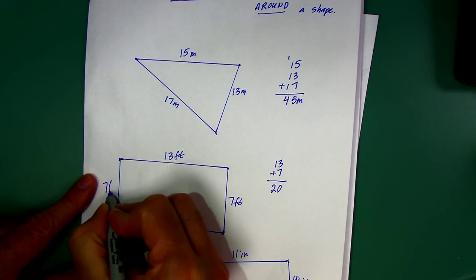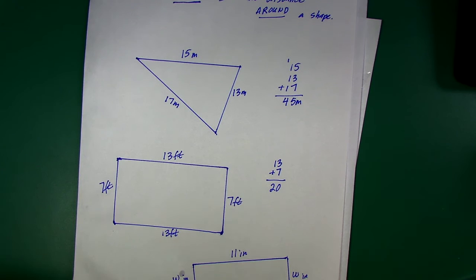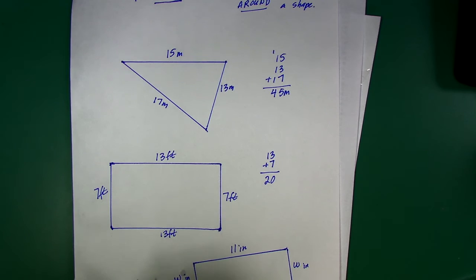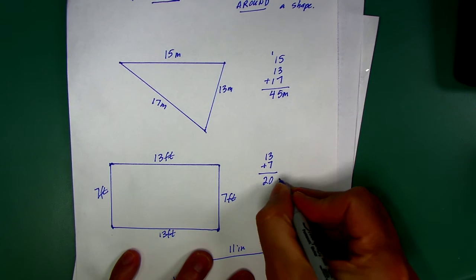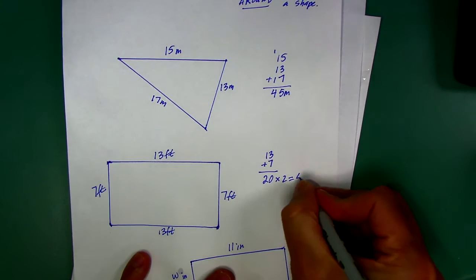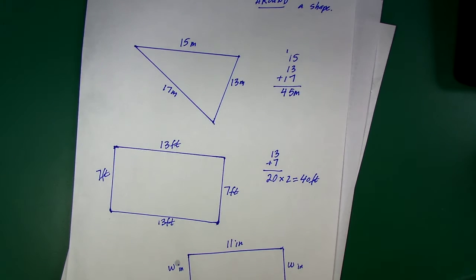You can write in the other two sides, 13 feet here. Rectangles have two pairs of equal sides. If it's a special rectangle, a square, all four sides would be the same. So you can just multiply it by four. Since I already did the 13 plus 7 once, I'm just going to multiply that by two. 20 and 20 is 40. So the perimeter of this rectangle is 40.